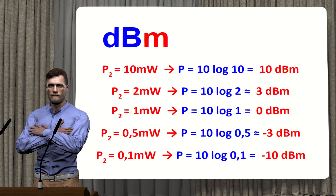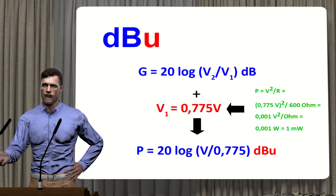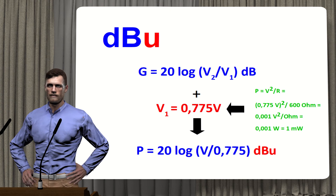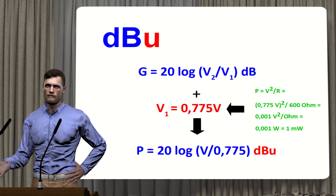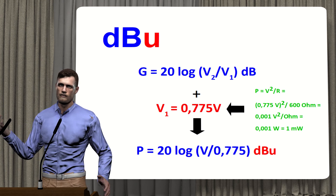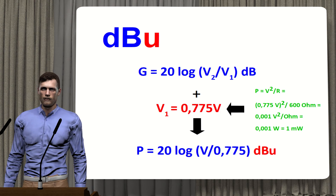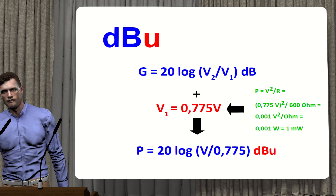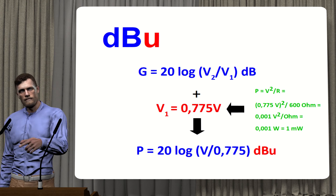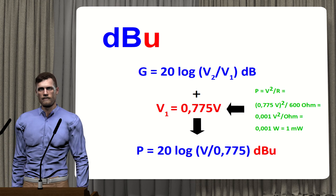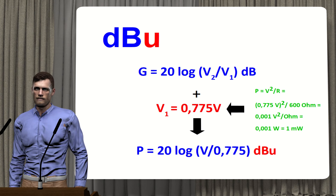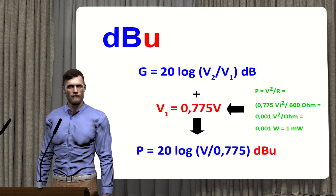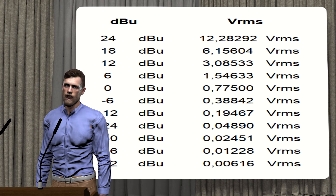Now let's move on to dBu. As we have seen, we can also express power gain as a function of input and output voltages. To convert this to an absolute value, a reference input voltage of 0.775 volts has been chosen. This voltage value is the one required so that, when applied to a resistance of 600 ohms, a power of 1 milliwatt is obtained. This 600-ohm benchmark has a long history, dating back to the early days of audio signal transmission over twisted-pair cables. We can thus obtain a table relating dBu to voltage in volts RMS.